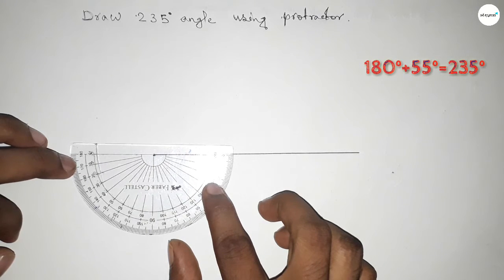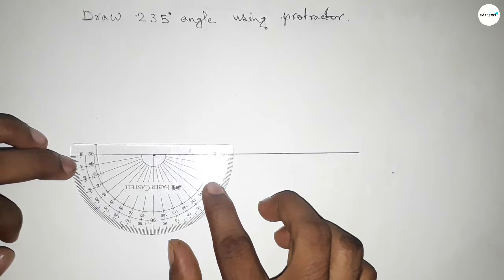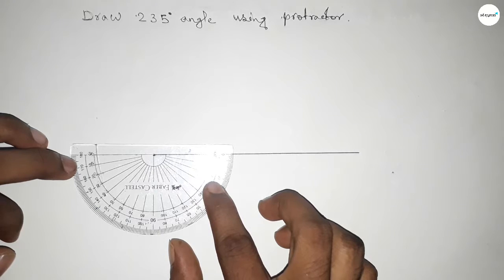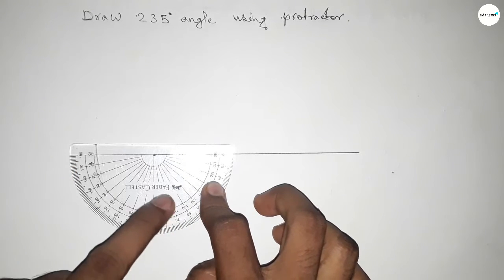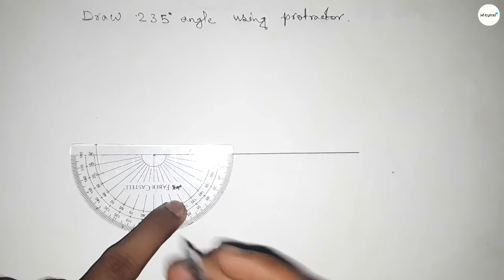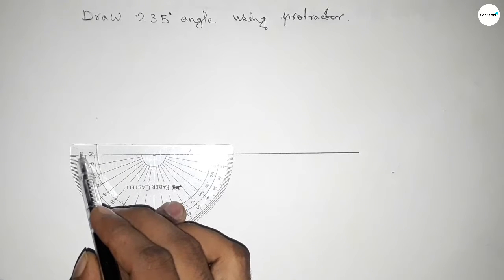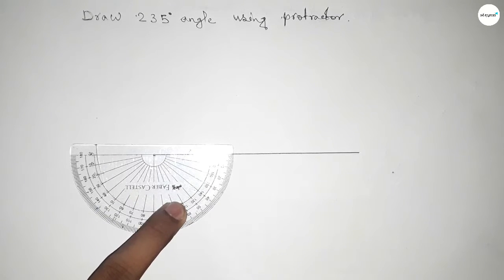And counting the angle. So this is up to 180 degrees. Now we have to add 55 degree angle with 180 degree to get 235 degree angle.